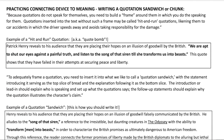We're going to practice connecting device to meaning — D2M — and I'm introducing a new concept called quotation sandwiches, or quote sammies. We want to avoid doing what's called a hit-and-run quotation, where you just write something and then lob a quote in and call it good. Because quotations do not speak for themselves, you need to build a frame around them. Here's an example of a hit-and-run quotation to avoid: Patrick Henry reveals to his audience that they are placing their hopes on an illusion of goodwill by the British. Then the quote is lobbed in, and the writer just says 'this quote shows us they have failed' — that isn't good analysis.